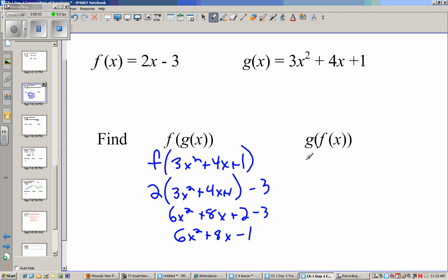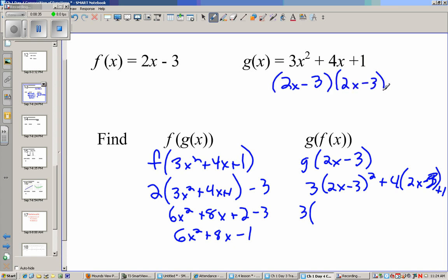Now if I do g(f(x)), it's going to be g(2x minus 3), which would be 3 times (2x minus 3) squared plus 4 times (2x minus 3) plus 1. Or 3 times (2x minus 3) squared is 2x minus 3 times 2x minus 3, which is 4x squared minus 6x minus 6x plus 9, or 4x squared minus 12x plus 9. So I can write that in here, 4x squared minus 12x plus 9.